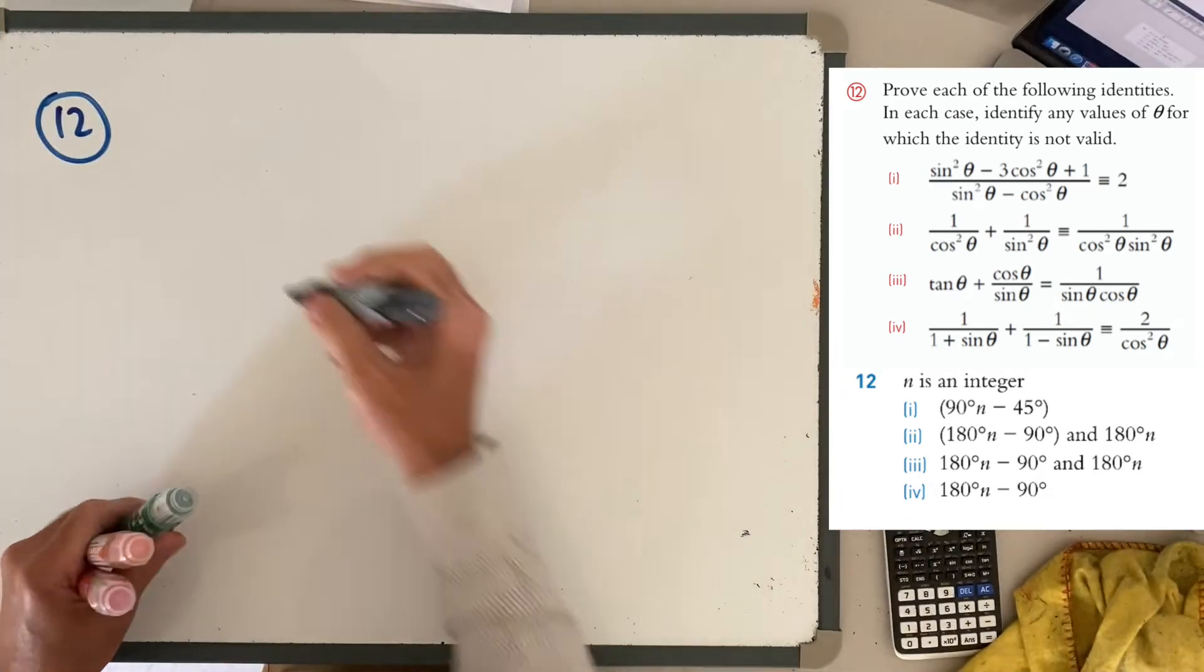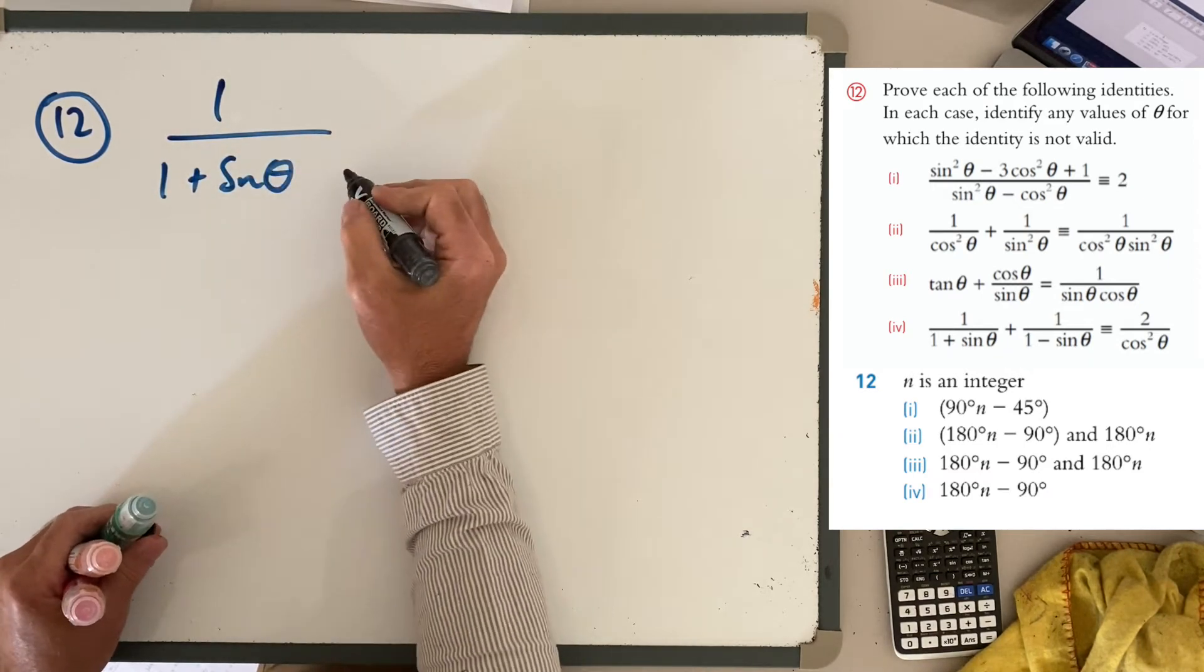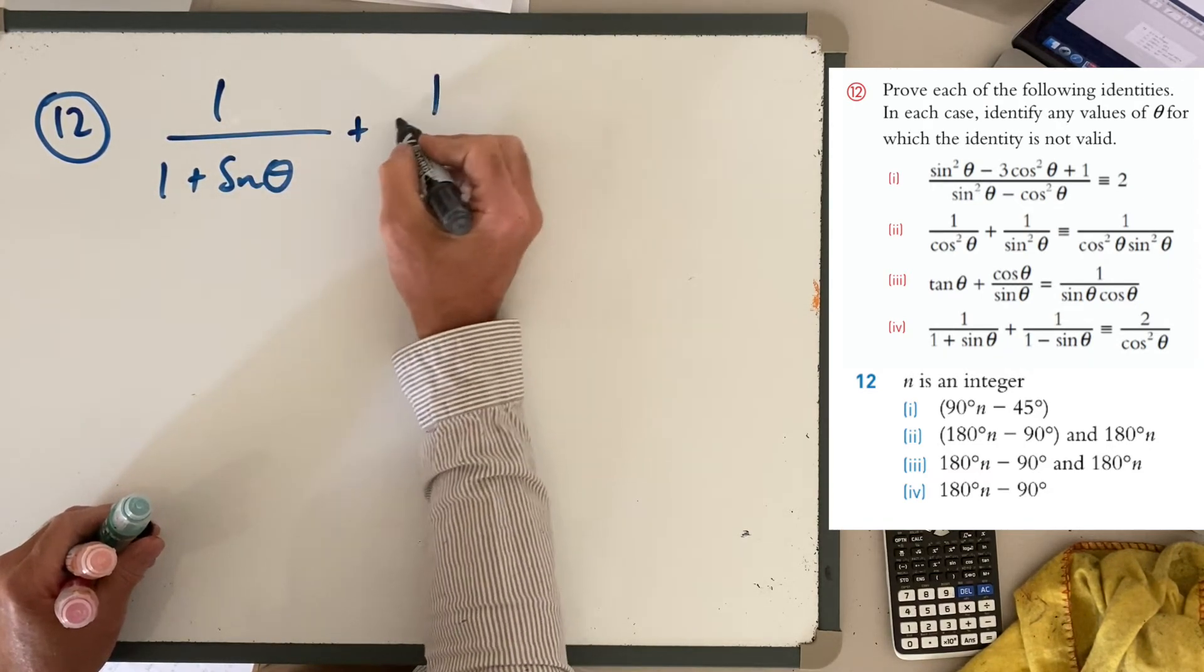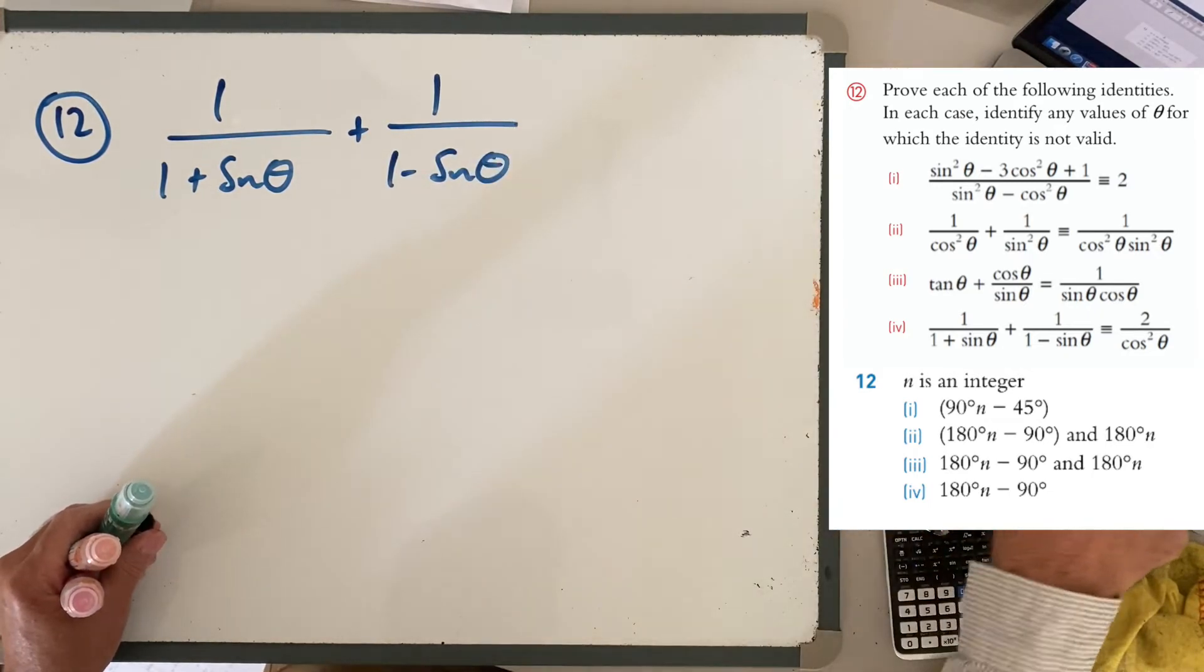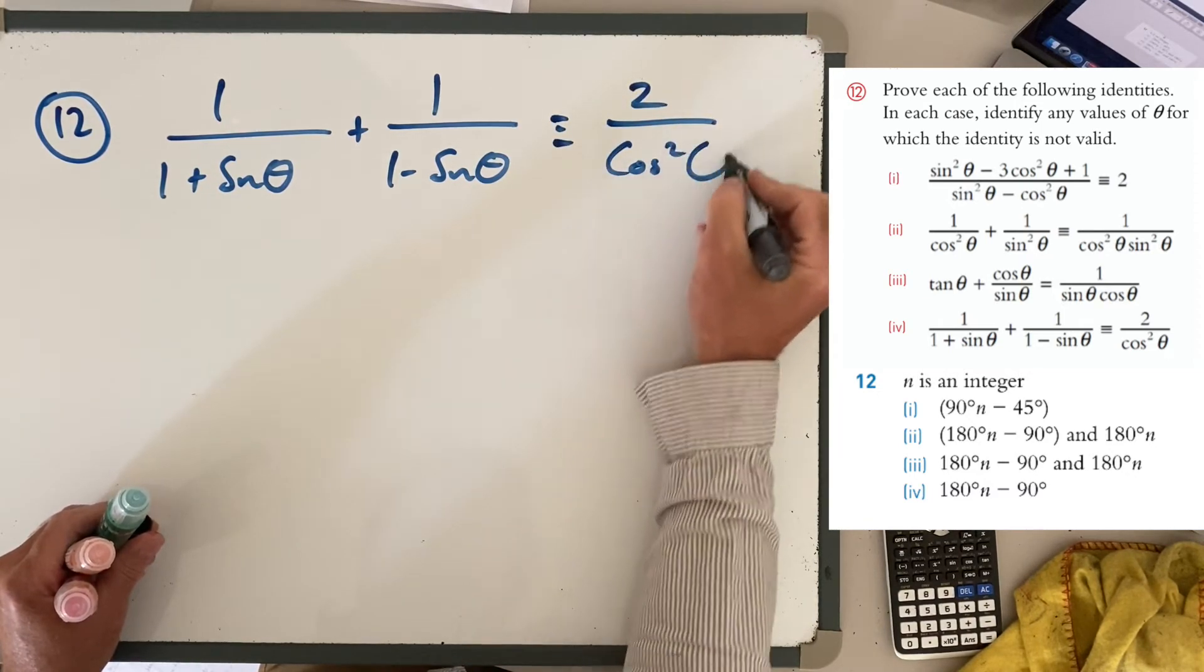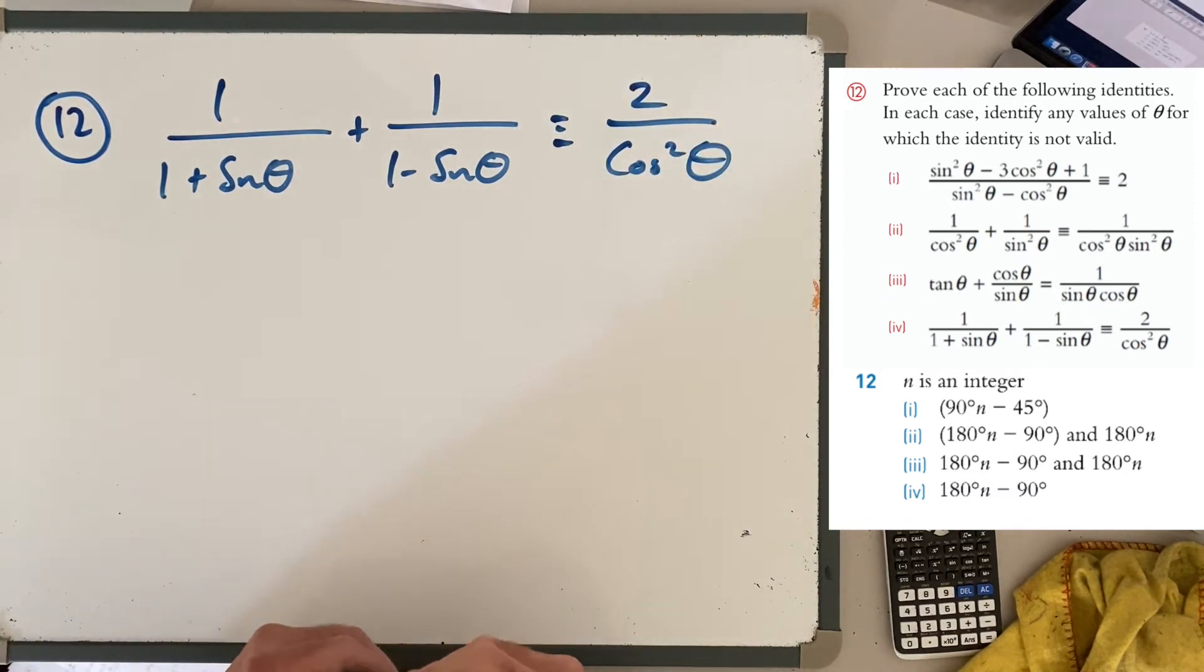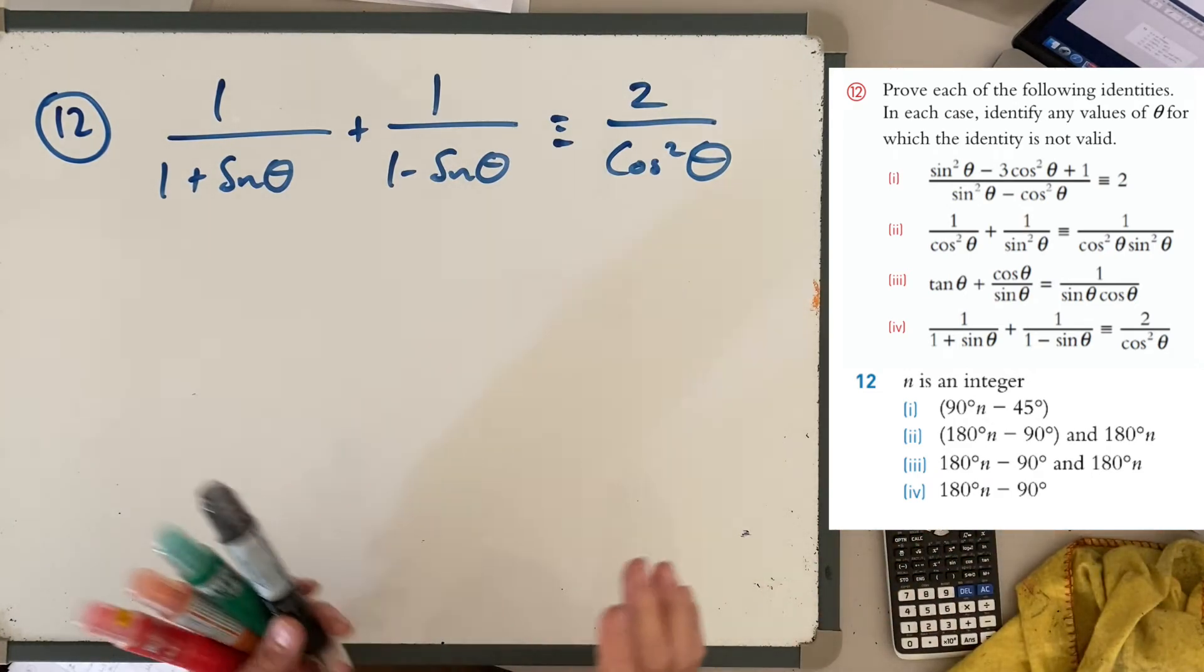Last one: 1/(1 + sin θ) + 1/(1 - sin θ) equals, or is identical to, 2/cos² θ.